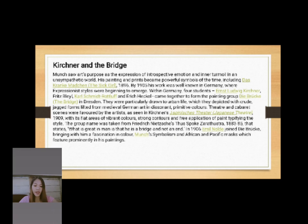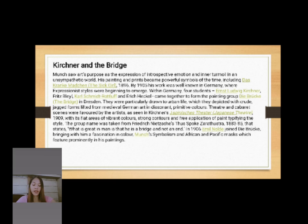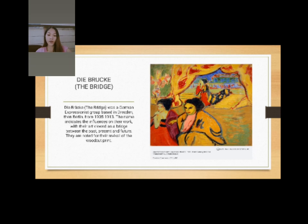The group's name was taken from Friedrich Nietzsche's 'Thus Spoke Zarathustra' (1883–1885), which states: 'What is great in man is that he is a bridge and not an end.' In 1906, Emil Nolde joined Die Brücke, bringing with him a passion for color, Munch's Symbolism, and African and Pacific masks, which featured prominently in his paintings. Die Brücke was a German Expressionist group based in Dresden, then Berlin, from 1905 to 1913. The name reflects the influence on their work, with their art viewed as a bridge between past, present, and future. They are noted for the revival of the woodcut print.